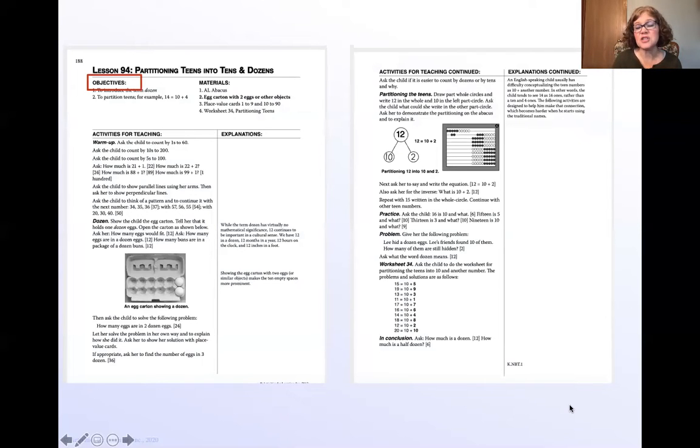The first thing you'll notice is the objectives. The objectives are simply what is going to be covered in that math lesson. So in this particular math lesson, you will see that you're going to talk about dozen. You're going to teach your child about dozen, apply the term dozen, 12, and you will also teach your child how to partition the number in the teens. So, for example, splitting 12 up between 10 and 2. That's all partitioning means.